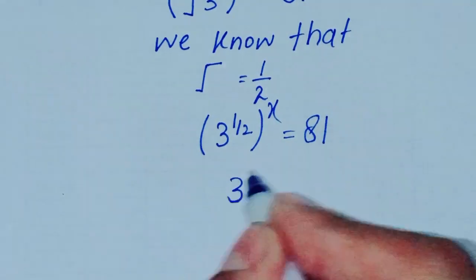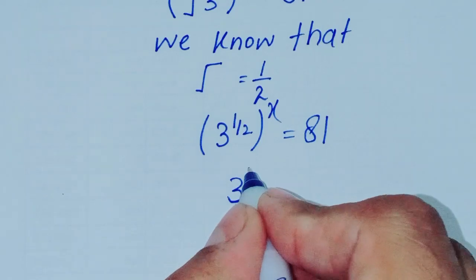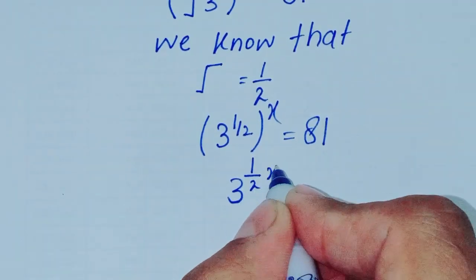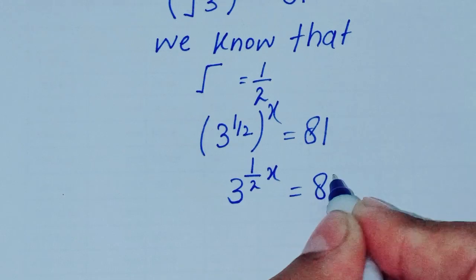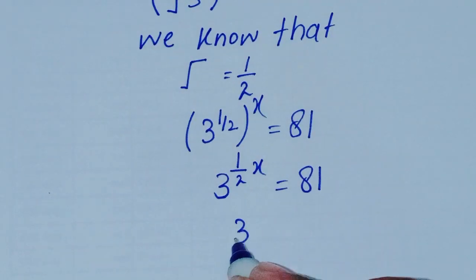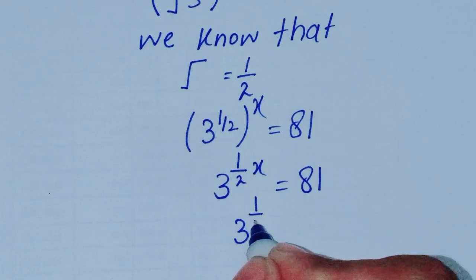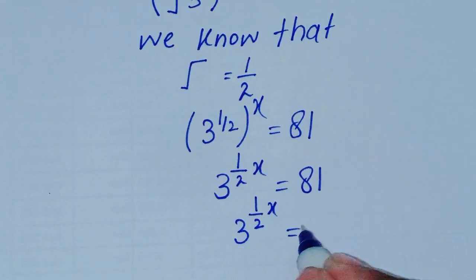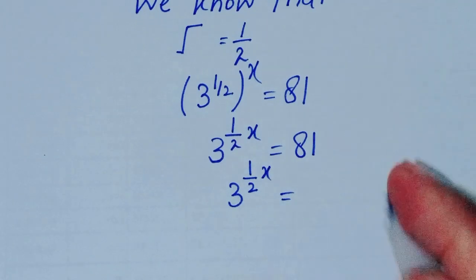So 3^(1/2 × x) = 81. Therefore 3^(1/2x) = 81.